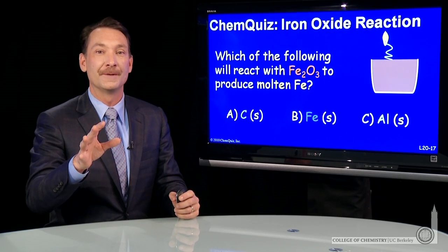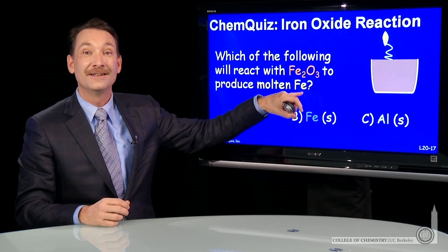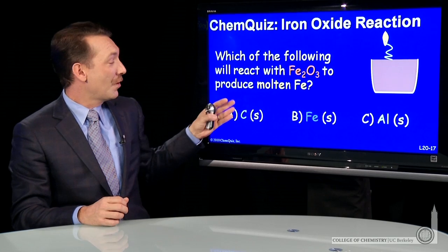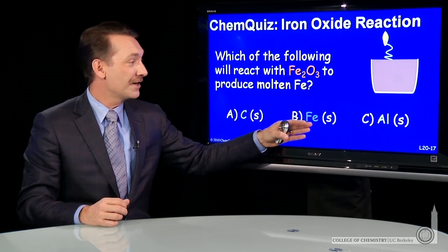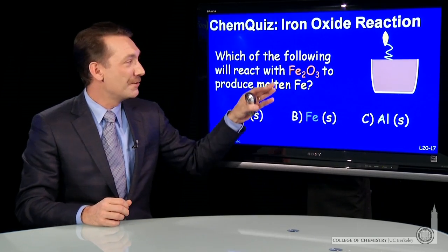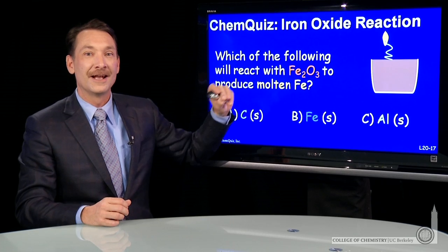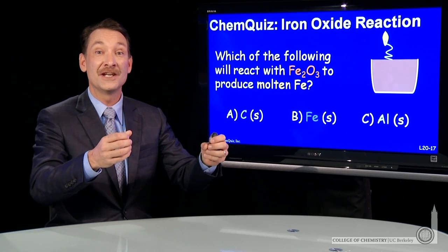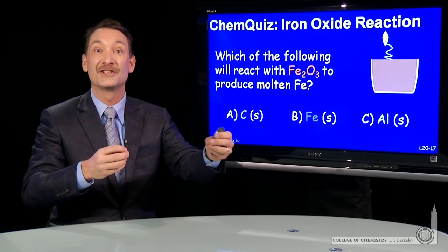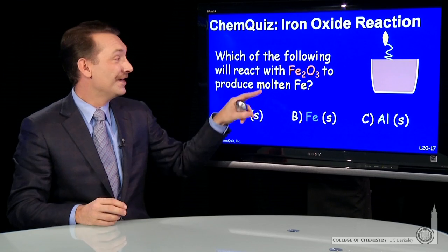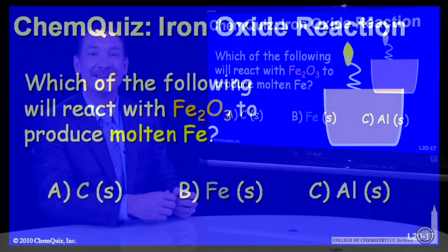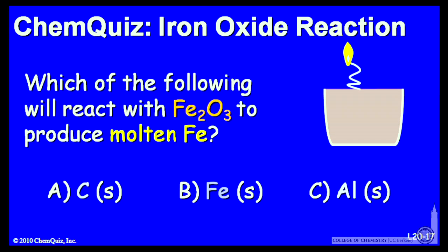Let's look at a reaction with iron oxide that produces molten iron. So which of the following - carbon, iron, or aluminum - should I react with iron oxide? And I'll give you a hint: it'll be an exchange reaction. The metals will exchange the oxygen to form molten iron. Think about that for a minute and make a selection.